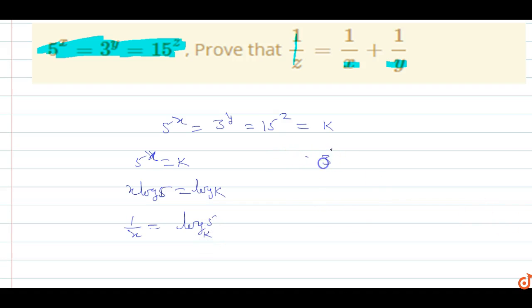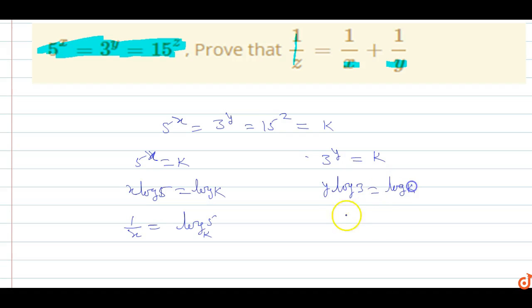We also know that 3 power y equals k. Taking log on both sides, this becomes y log 3 equals log k. So 1 upon y equals log 3 base k.